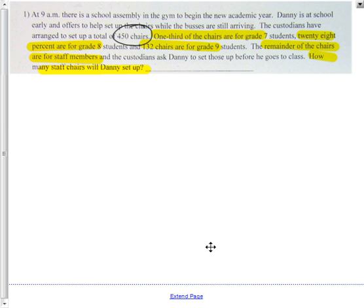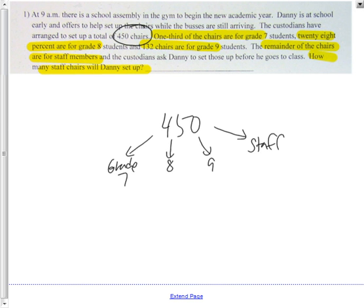Our 450 chairs are made up of four groups: grade 7, grade 8, grade 9, and staff. For grade 7, one-third of 450 means 150 of the 450 chairs are grade 7.